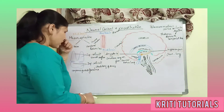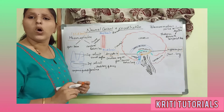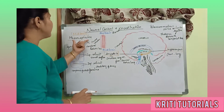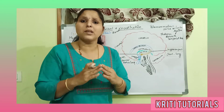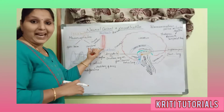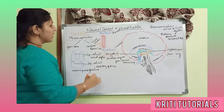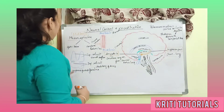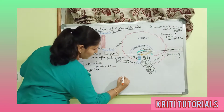Now coming to the next part of the brain — the midbrain, also called mesencephalon. The midbrain is majorly divided into two parts: the first is the optic lobes and the second is the cerebral peduncles, also termed crura cerebri. Looking at the diagram, the midbrain consists of four lobes separated by transverse fissures.